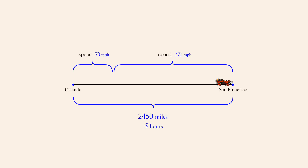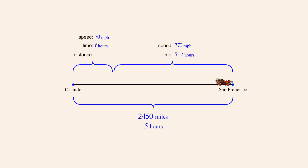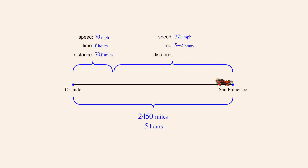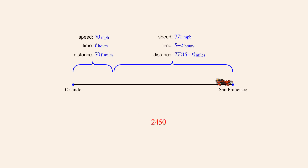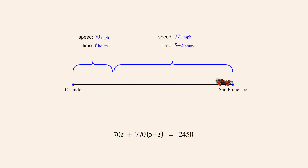Upon reaching San Francisco, 2,450 miles from his starting point, he checks his watch and sees that it has been five hours since he started. However, he forgot to record the time he switched into flight mode, so he does not know how long he was driving at 70 miles per hour and how long he was flying at 770 miles per hour. Fortunately, using algebra, it is possible to calculate how long he traveled at each speed. Let's let T represent the amount of time traveling at 70 miles per hour. Since the total travel time was 5 hours, the amount of time traveling at 770 miles per hour is 5 minus T.